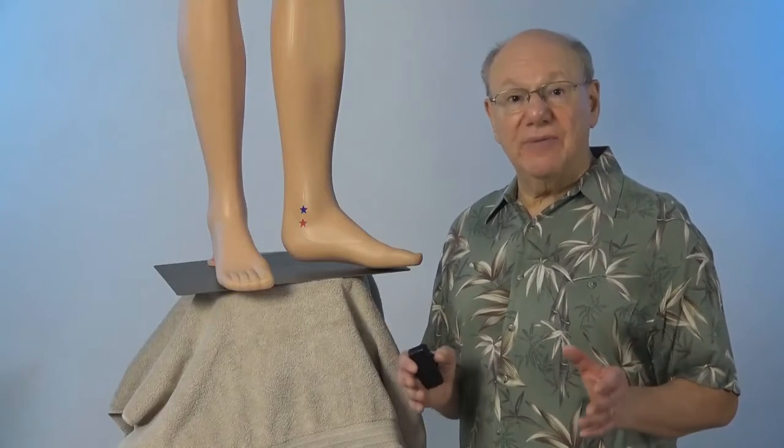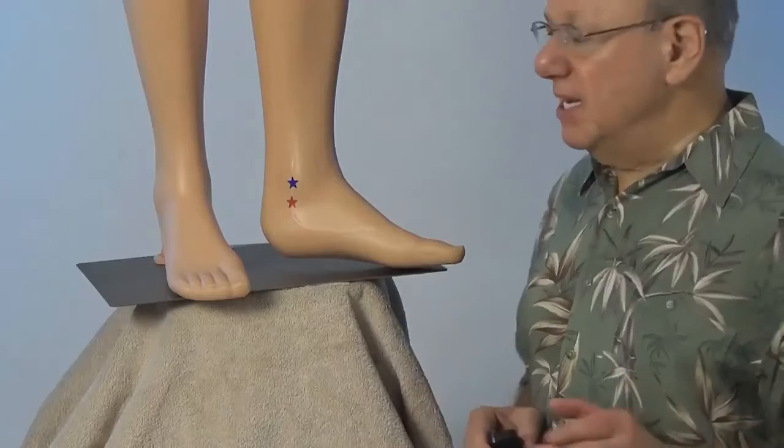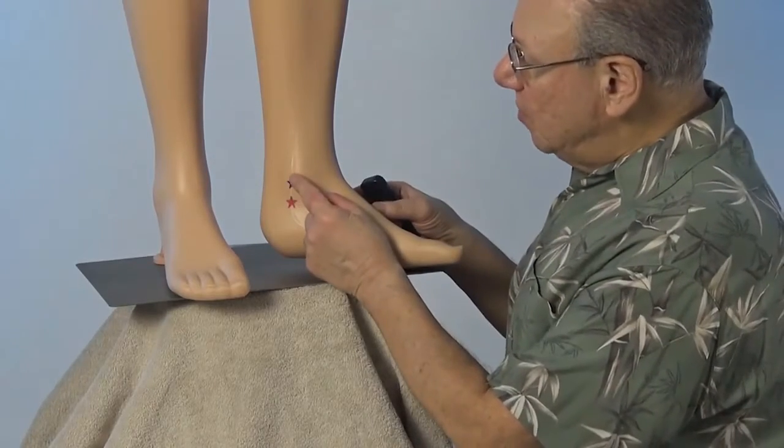Kidney 6 is located on the inside of your ankle. To locate Kidney 6 on the inside of your left leg, find the tip of your ankle bone right about here.